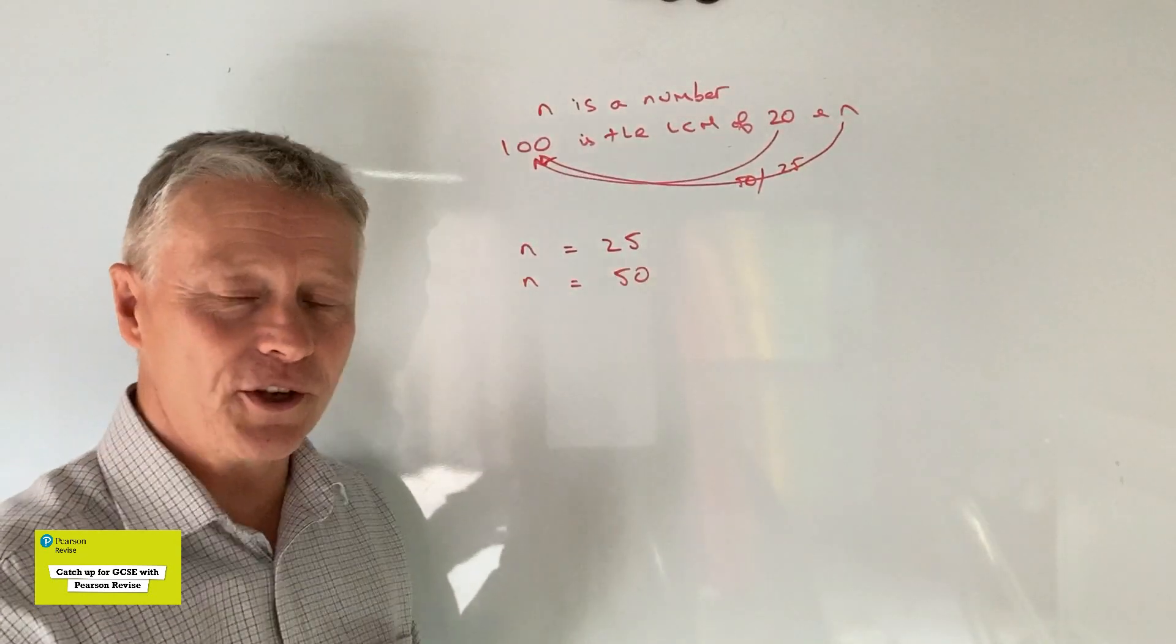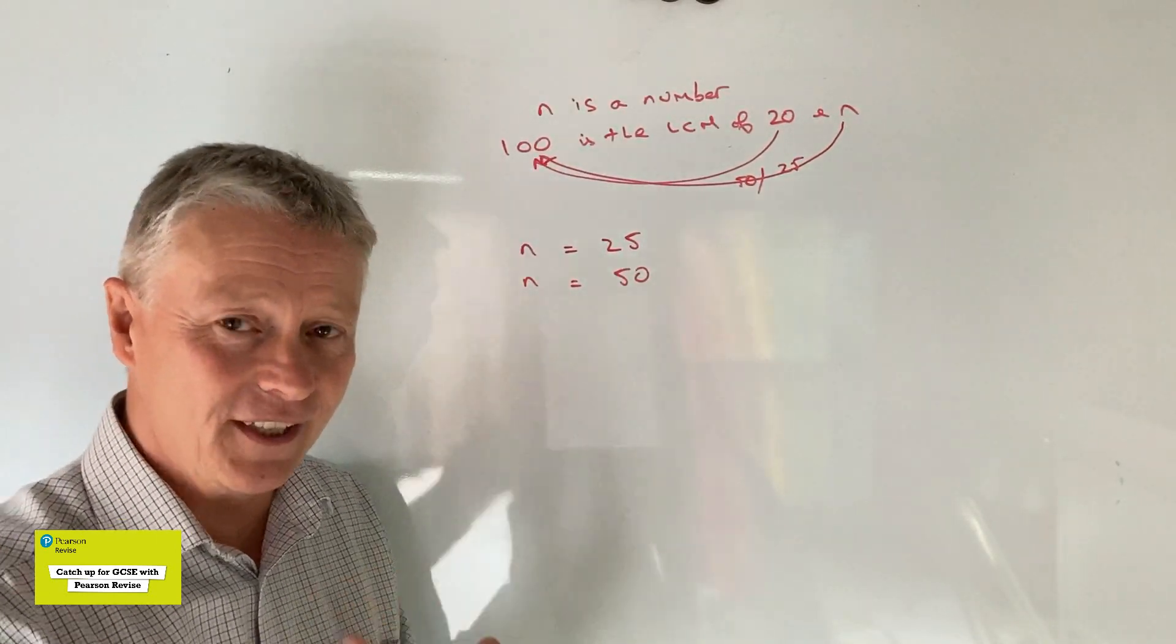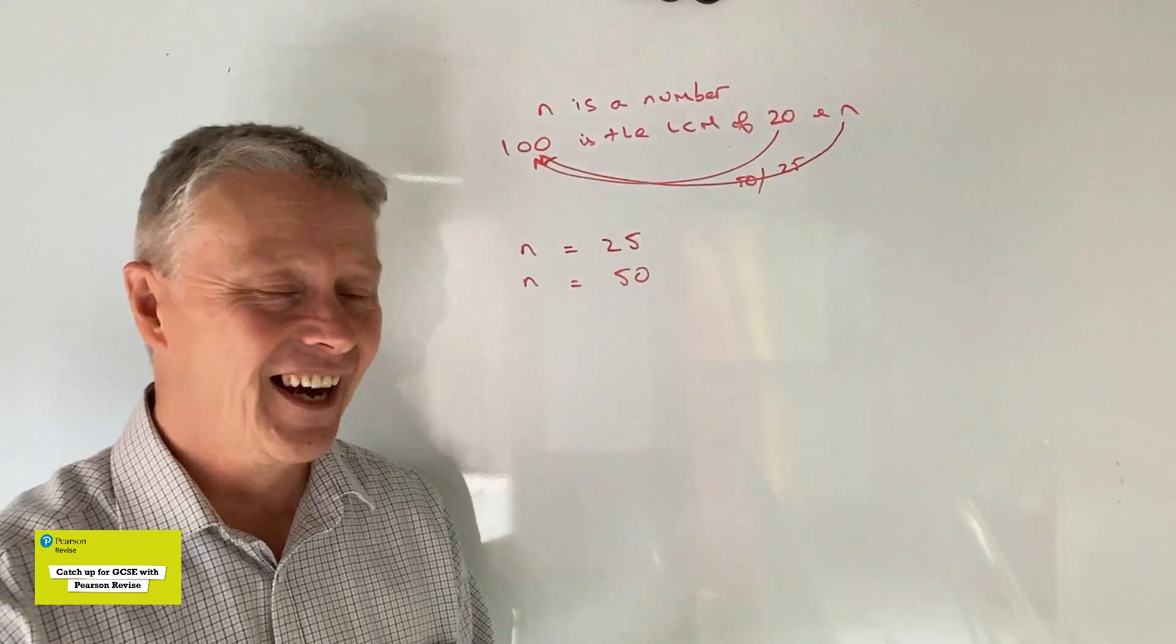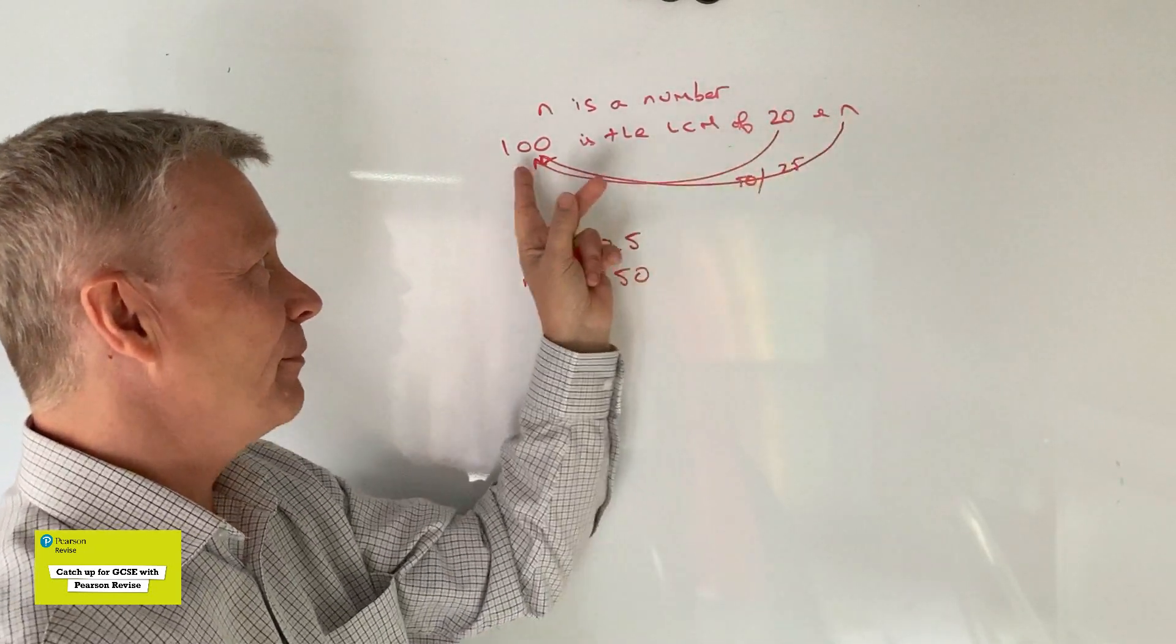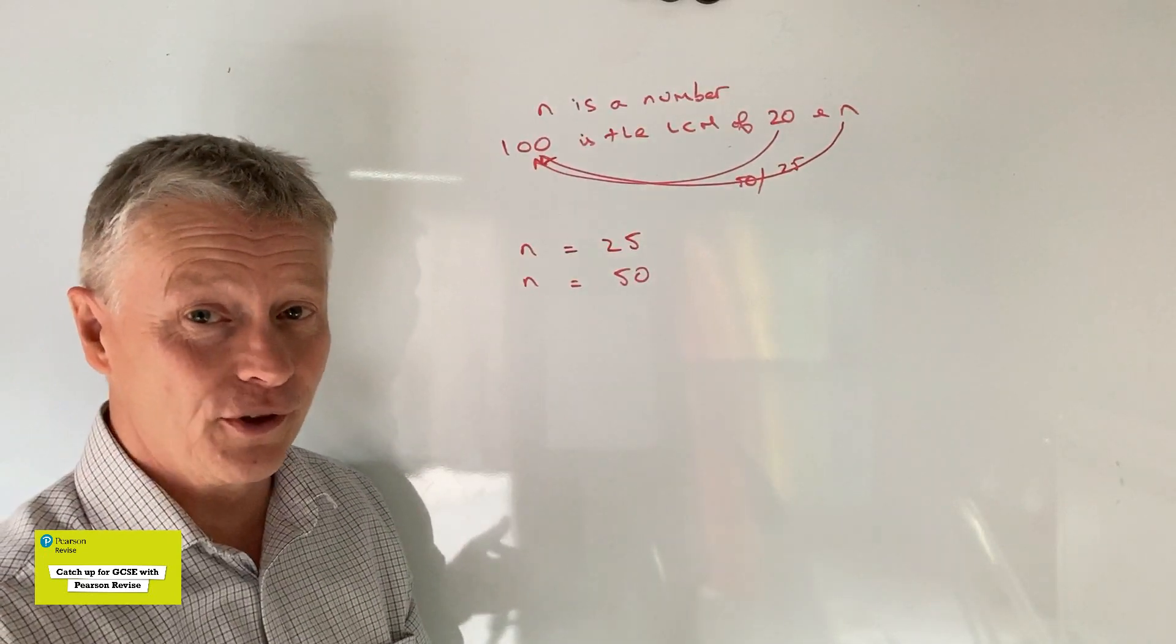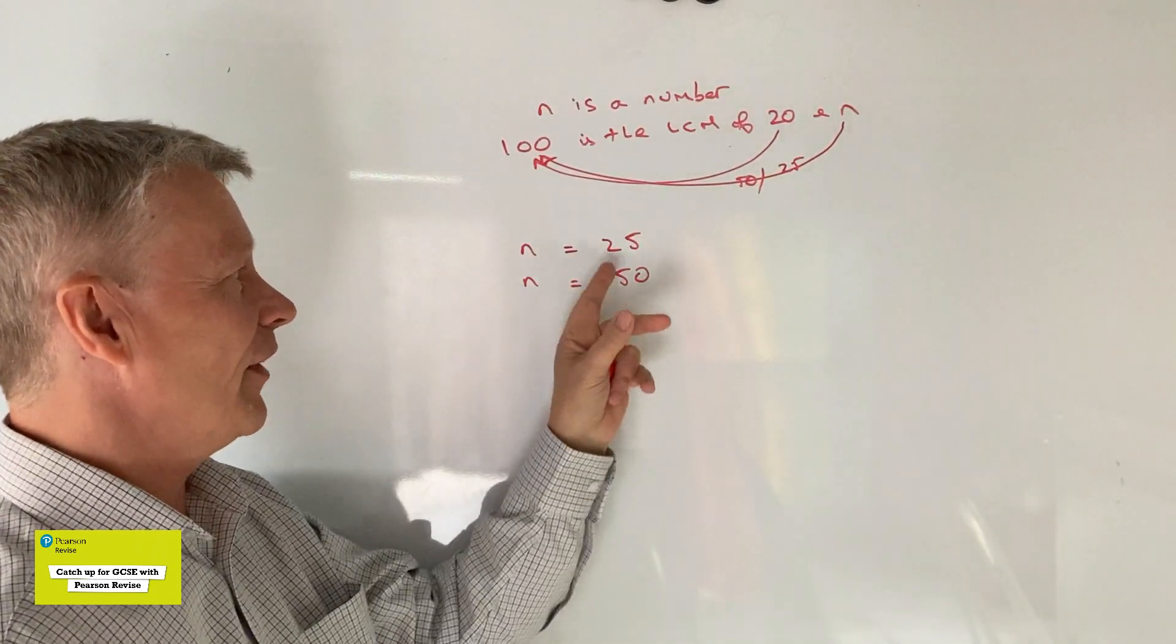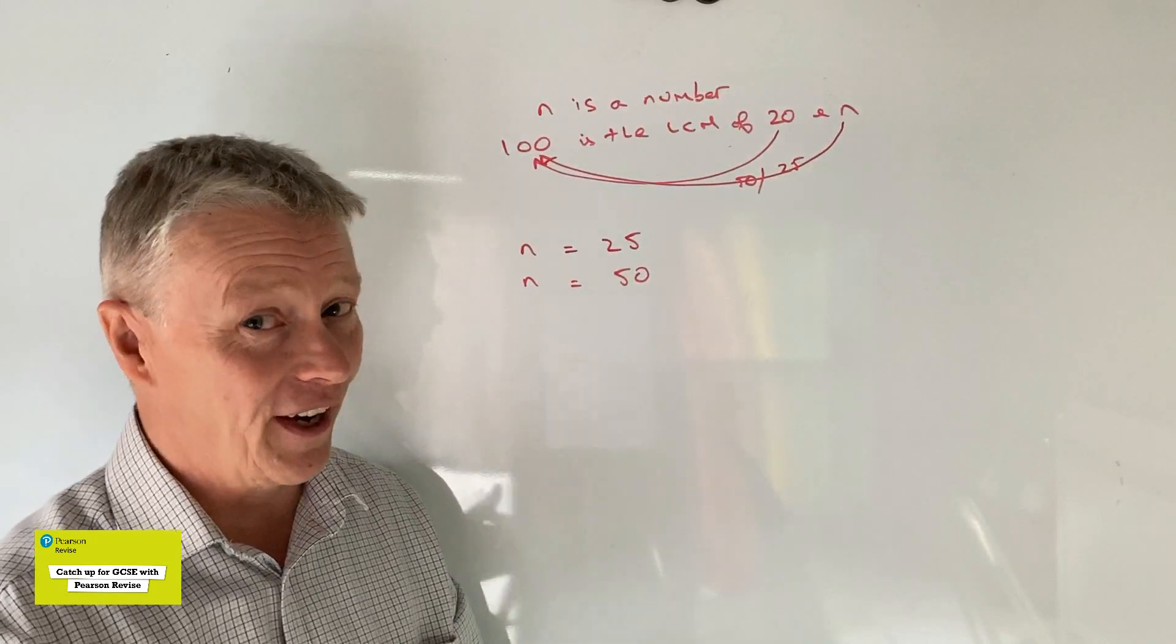So actually, even though the question itself is really quite tricky to kind of understand, once you read it through, once you appreciate that these numbers have to be factors of 100, you just simply figure out that N could be 25 or it could be 50.